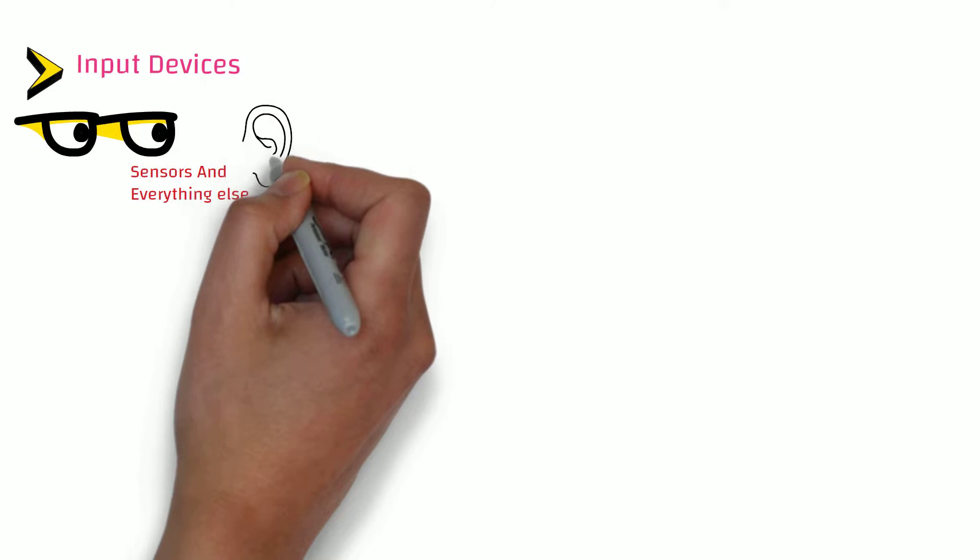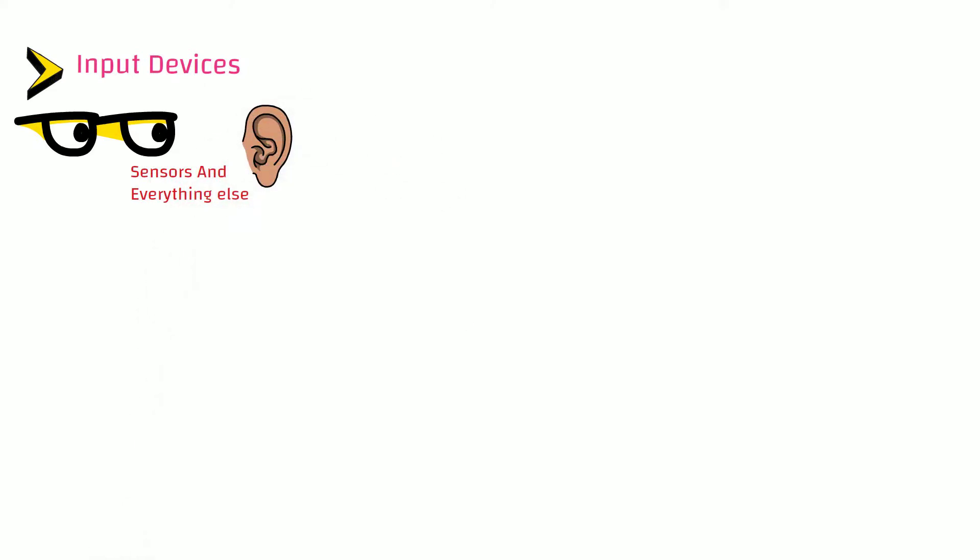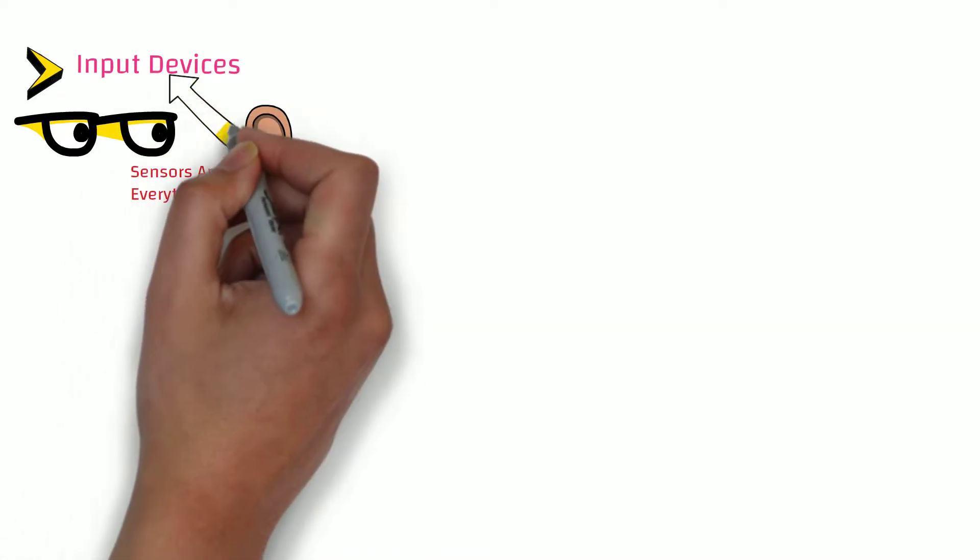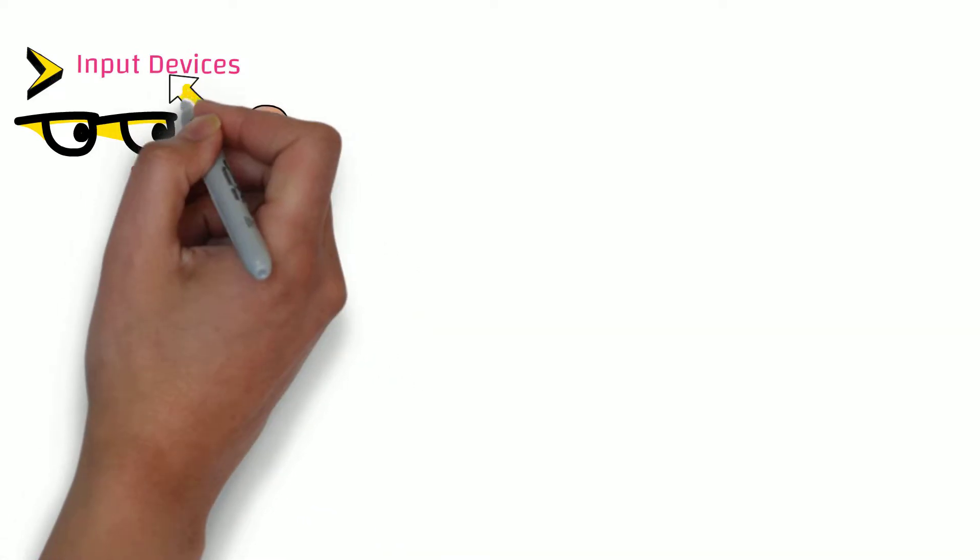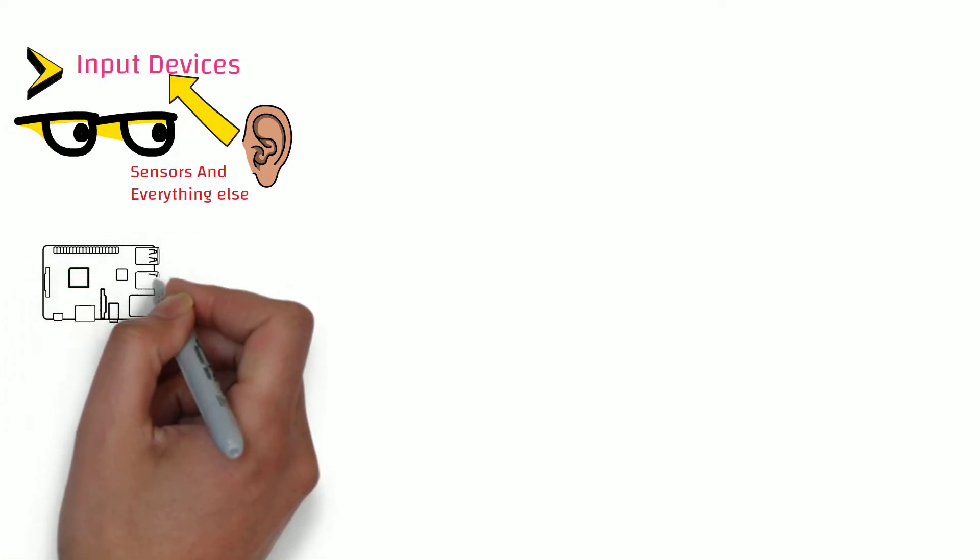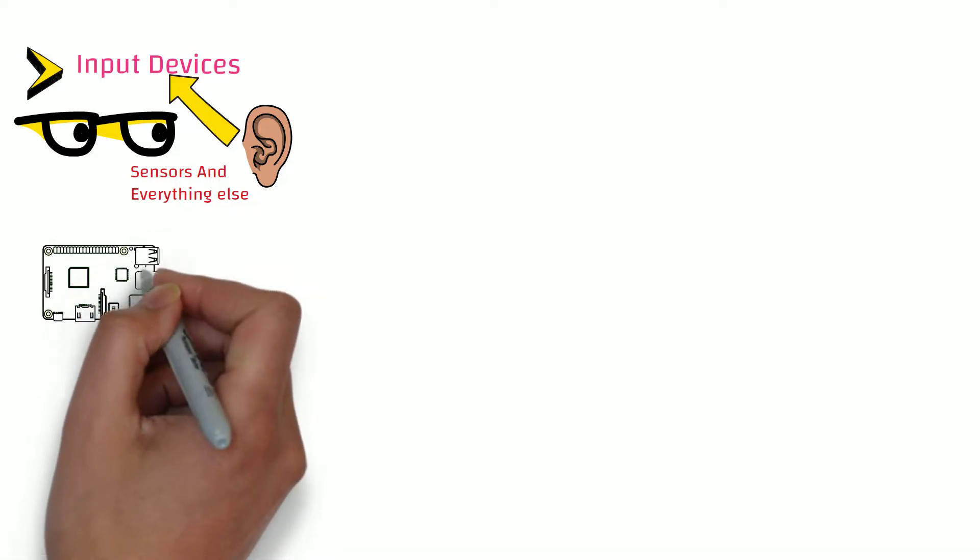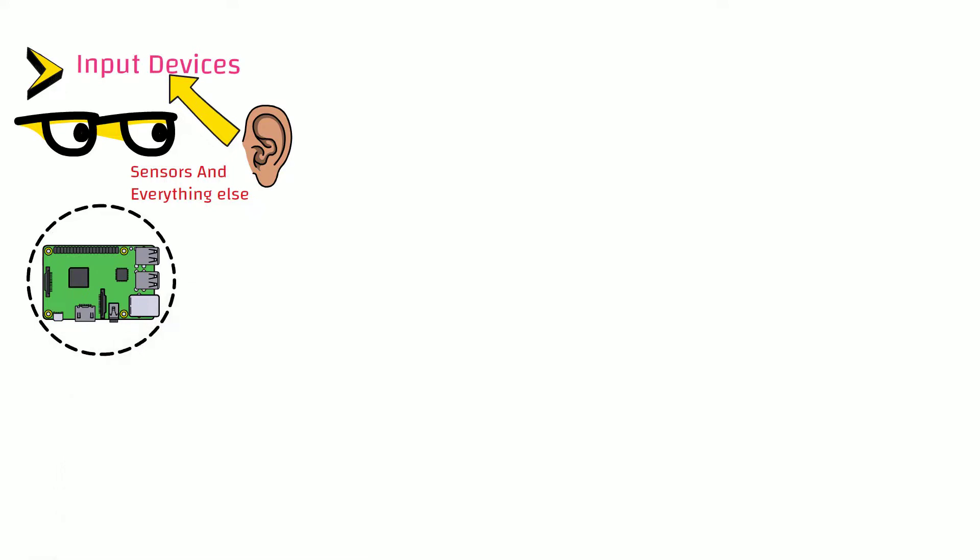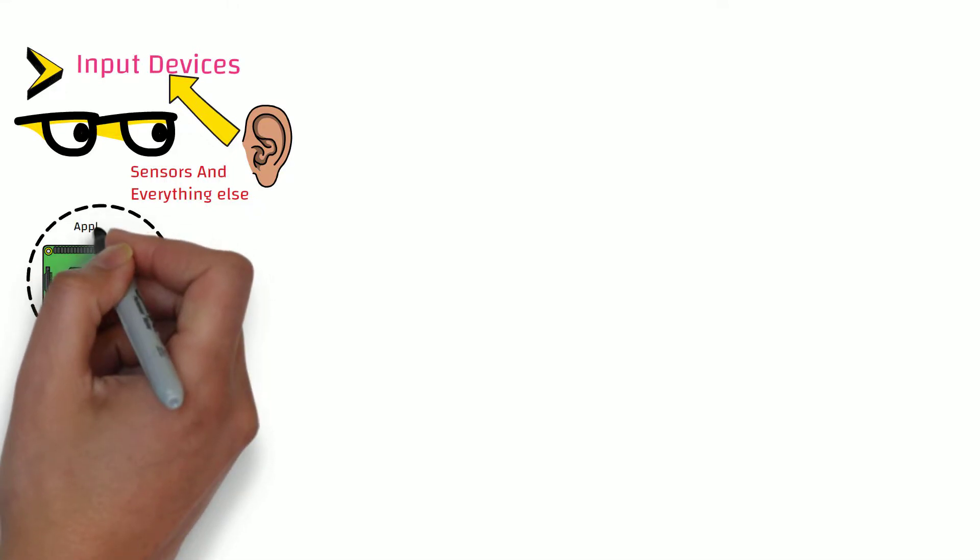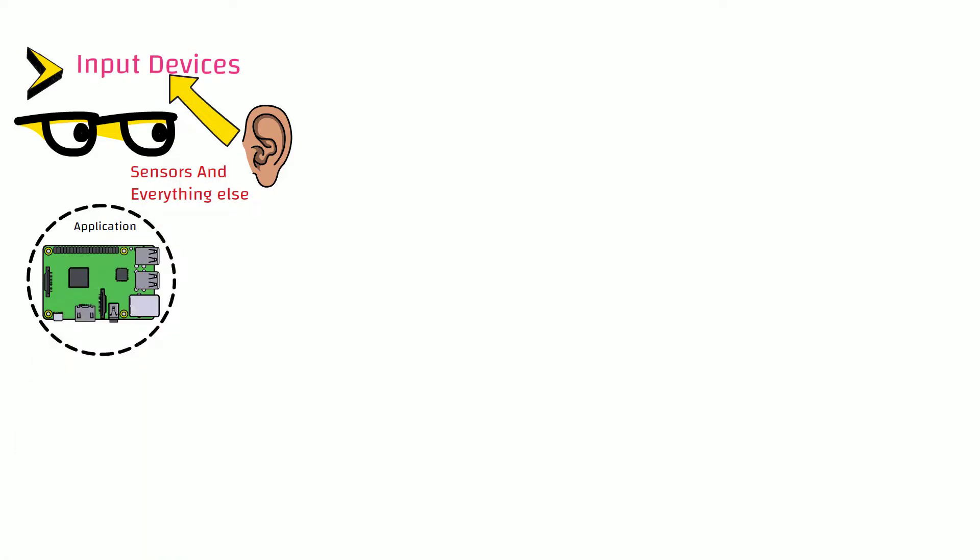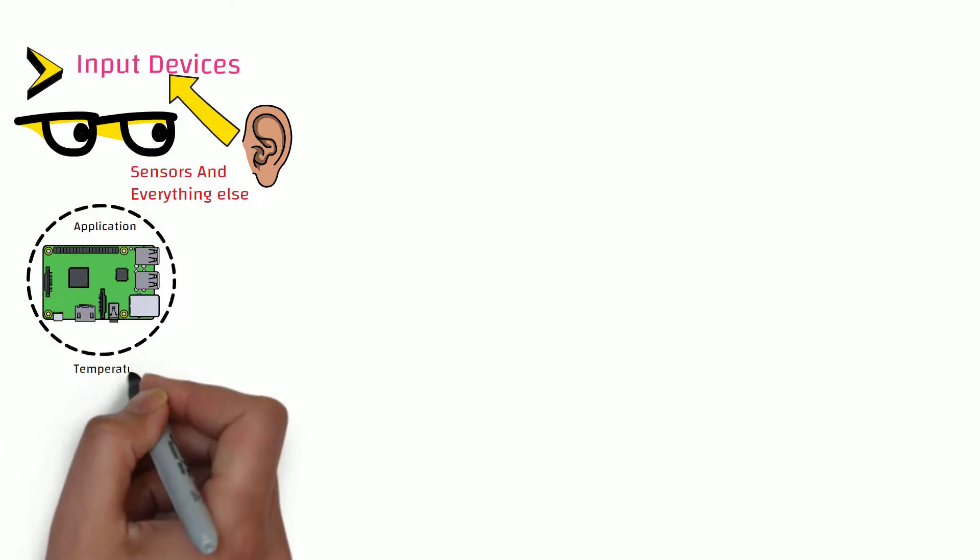Sensors can be considered as the eyes and ears of the embedded system. Sensors sense various signals in the environment and give that information as input to our embedded system. The actual sensor that an embedded system has is highly dependent on the application. Since the hardware is custom built for the given application, there is no use having sensors that we don't need.